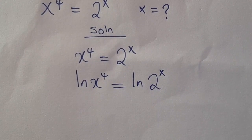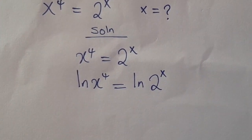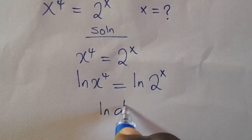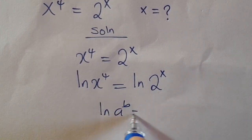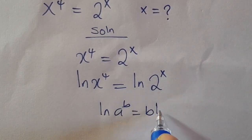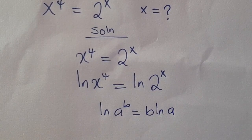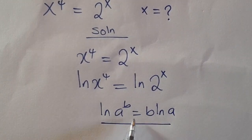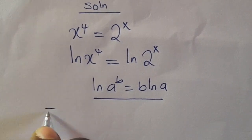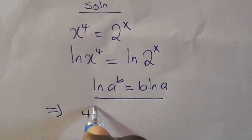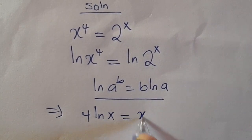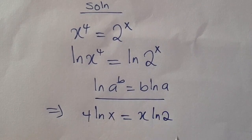From here, when you have something of this nature — when you have ln of a raised to power b, this equals b times ln a. So by applying this expression here, we are going to have 4·ln(x) equals x·ln(2).